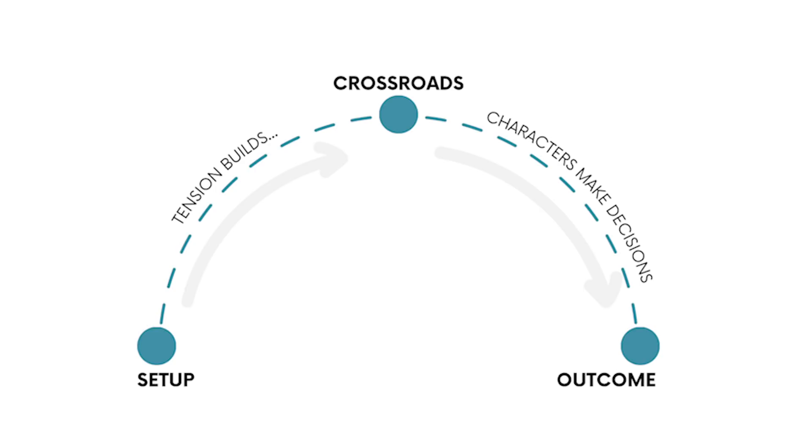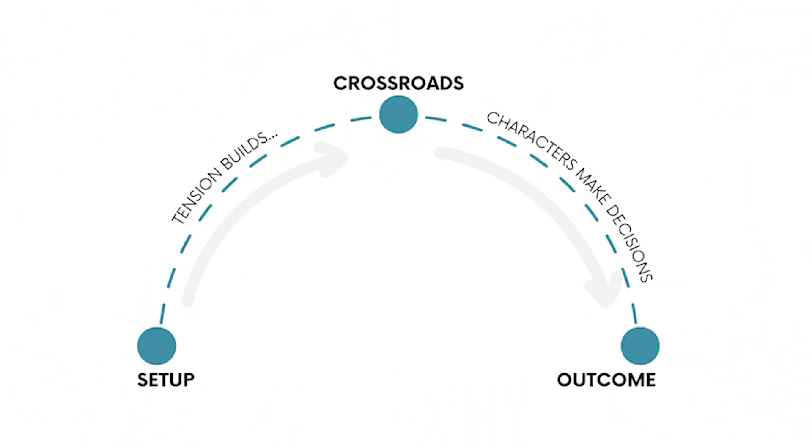Looking closer at each beat of this arc: first we have the setup, where your characters begin the scene fraught with internal conflict and probably facing some external conflict as well. No matter what's happening, tension should be building, leading us toward the main conflict of the scene — the crossroads moment. I call this the crossroads because it's a pivotal moment where the scene could really go two different ways, depending on how your characters respond to the external conflict. The decisions they make are based on their own internal conflict — their desires, fears, and misbelief — and how they react or respond leads them to the outcome.